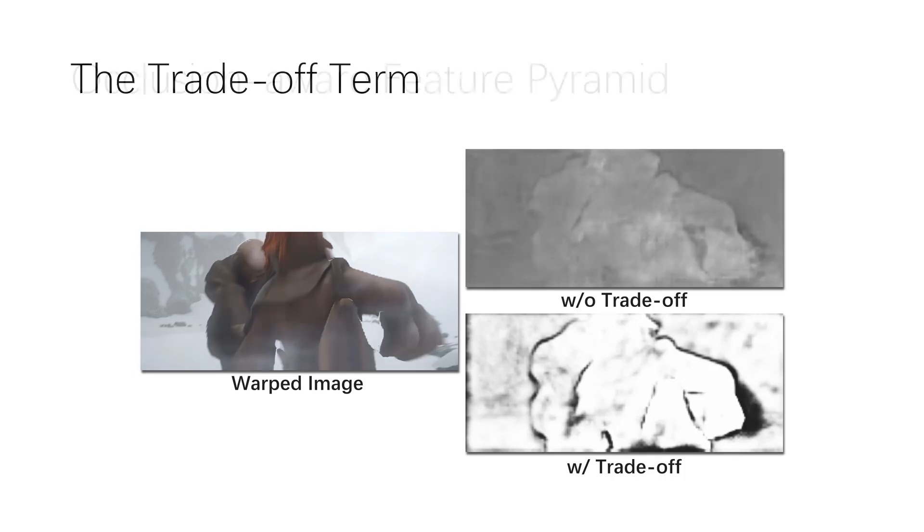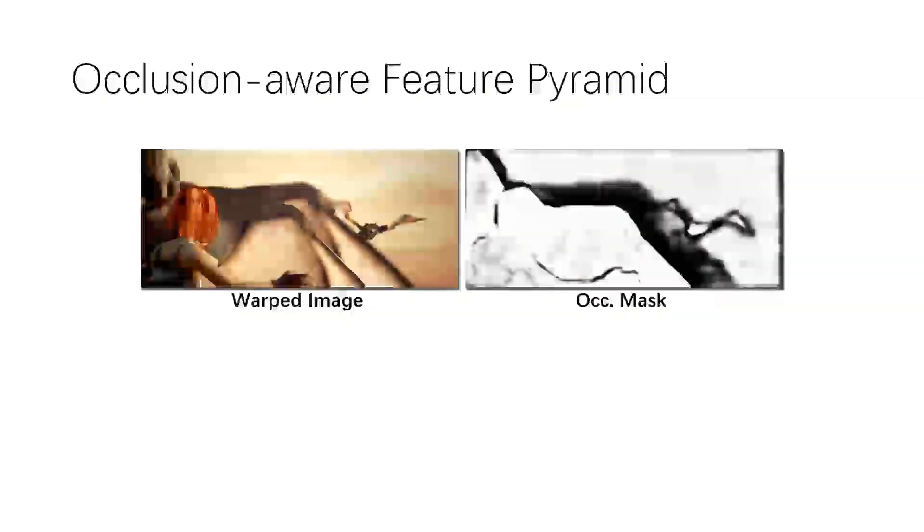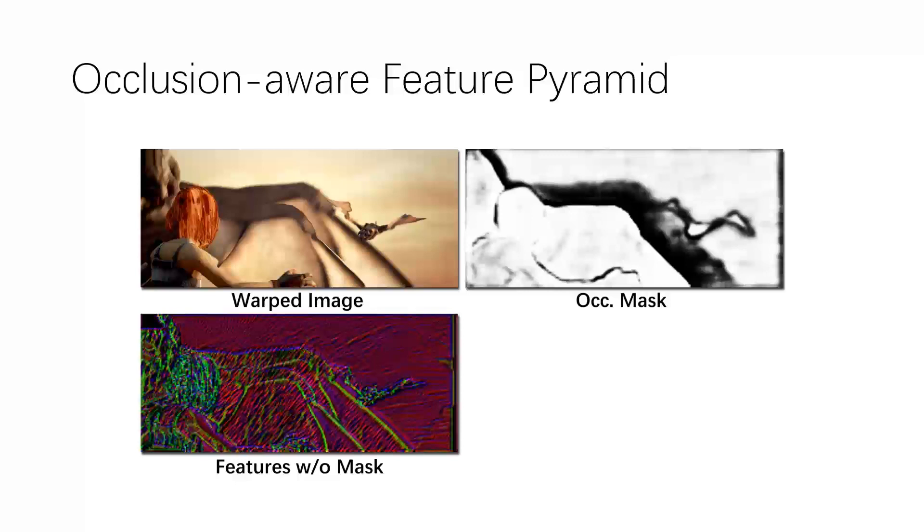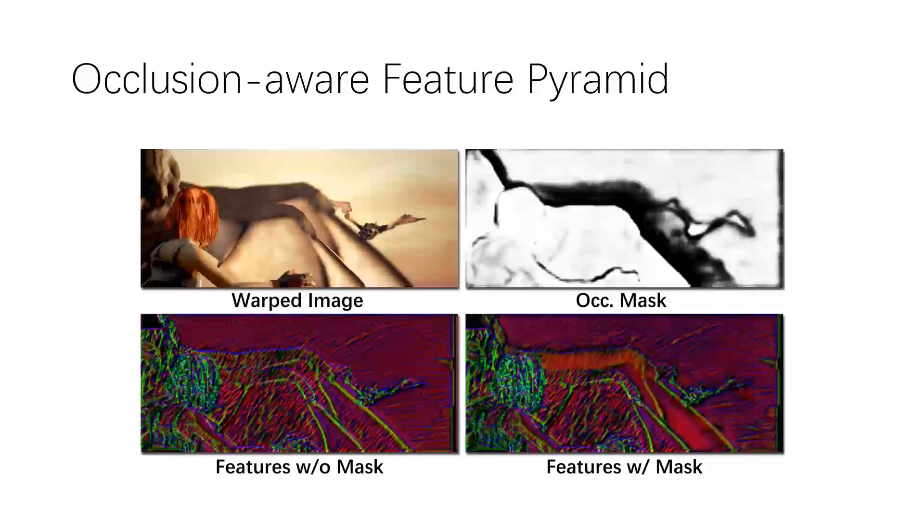As for the occlusion-aware feature pyramid, comparing the features with and without the learned occlusion mask, we can see that it has a significant effect on smoothing the feature map at the occluded areas.